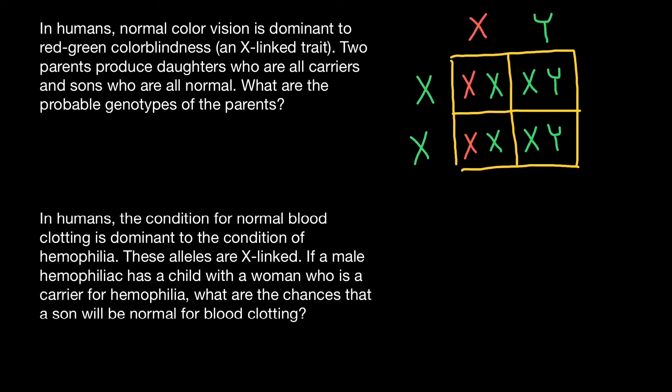So this is how easily we can solve this problem. Now let's move to the second problem. In humans, the condition for normal blood clotting is dominant to hemophilia, and these alleles are X-linked. If a male hemophiliac has a child with a woman who is a carrier for hemophilia, what are the chances that a son will be normal for blood clotting? Let's use different colors to designate normal and defective chromosomes. We know that the father is hemophiliac, so we use a red X to designate his defective chromosome and a normal Y.